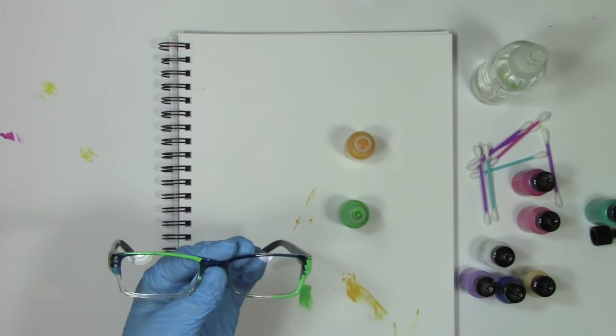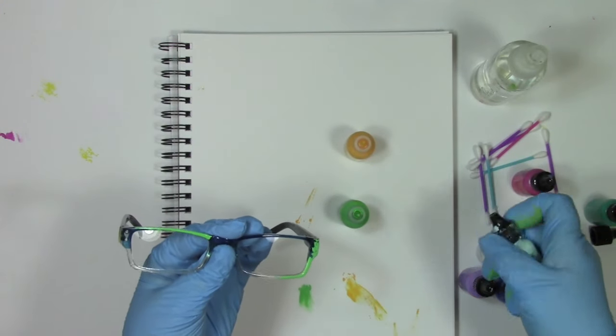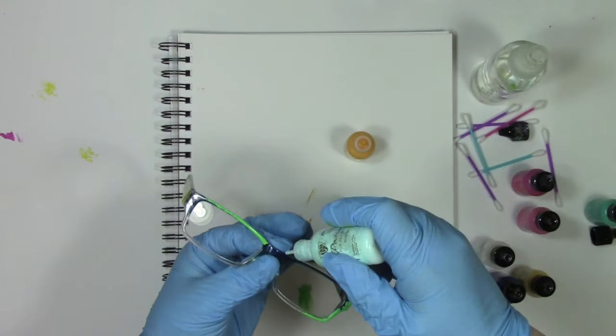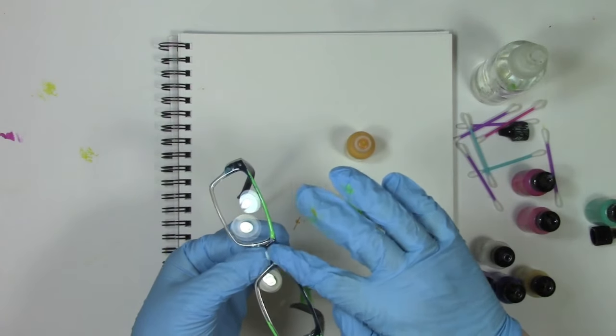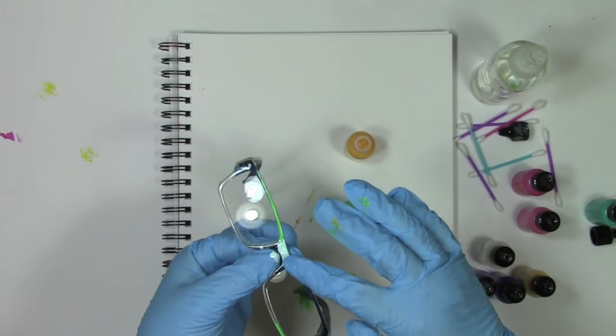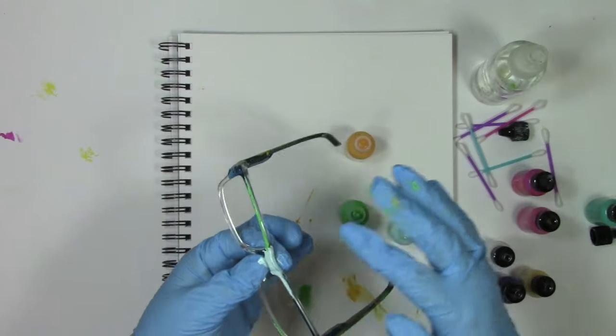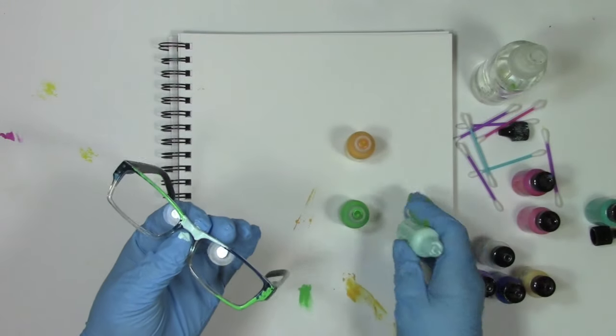If I get any on the lenses, that's what the alcohol and the Q-tips are for over there. That's rubbing alcohol and that will take this stuff off. So if I get any of it on the lenses, I figure that'll be my cleanup. So I'm going to keep going along and dabbing bits of color in places on these.